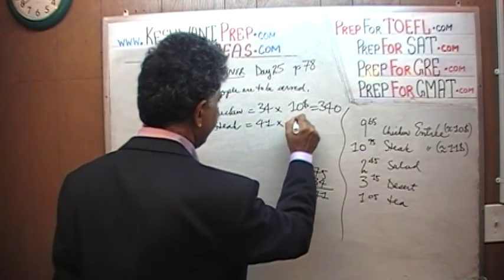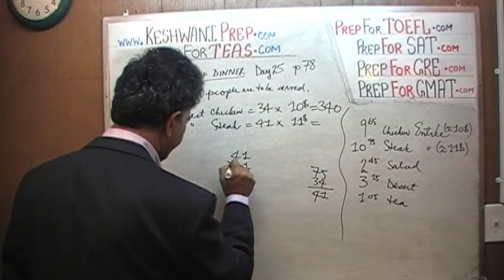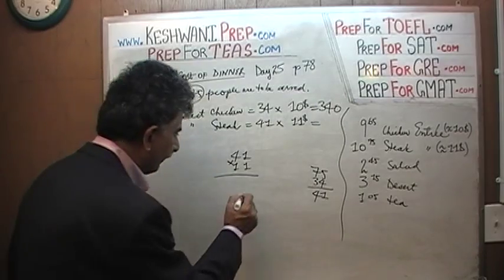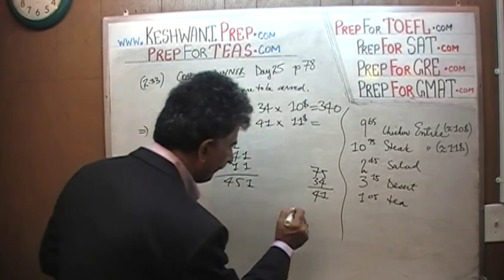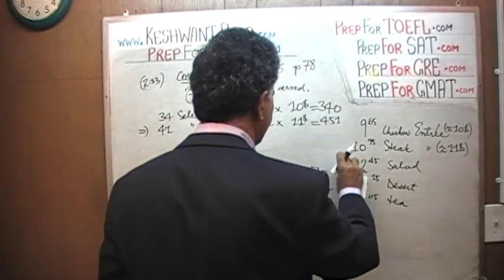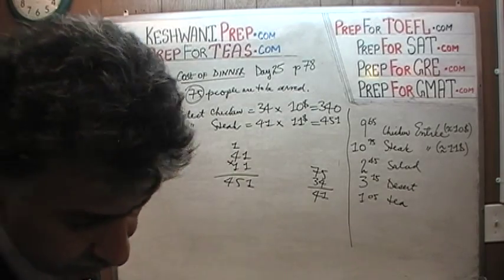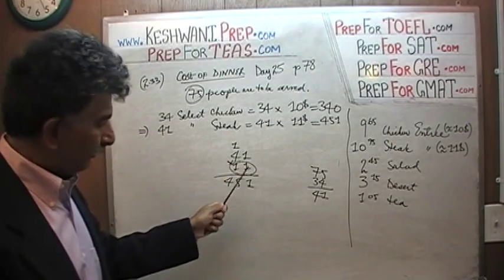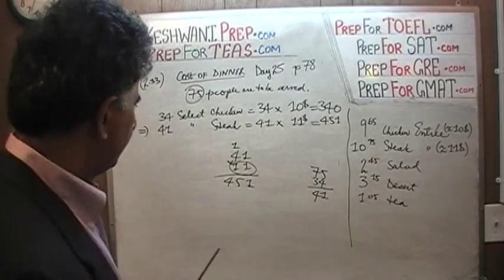So that's 41 times $11. Let's work that out. 11 times 1 is 11, carry 1. And 11 times 4 is 44, plus 1 is 45. So that's $451. Those were the two biggest expenses for the dinner. I took 11 as a whole — 11 times 1 is 11, carry 1, and 11 times 4 is 44 plus 1 is 45. The reason we do it together is because 11 is very easy to deal with.